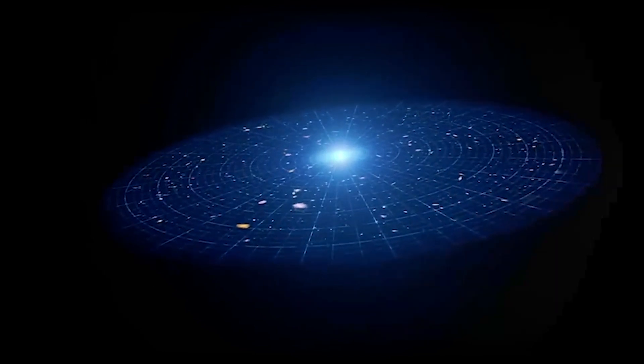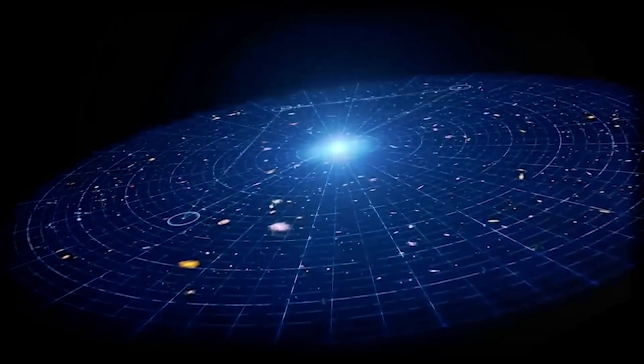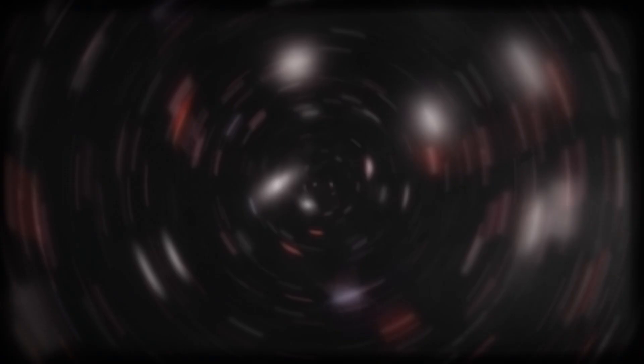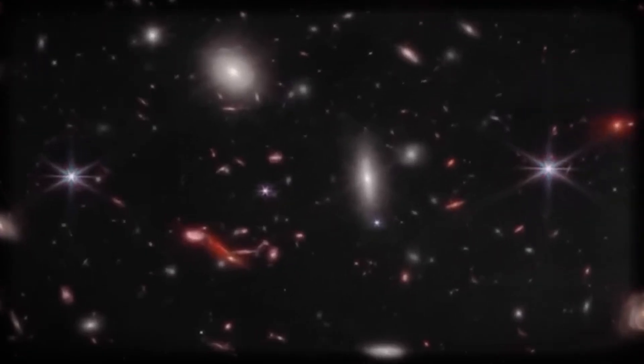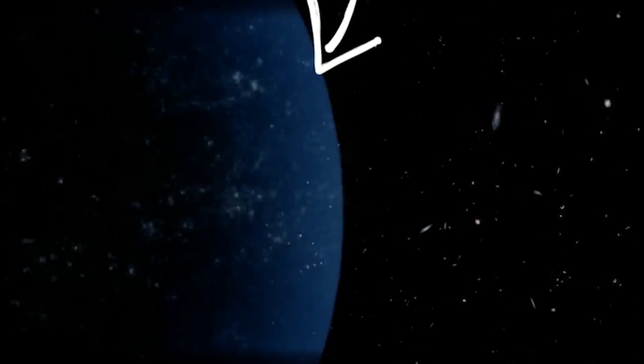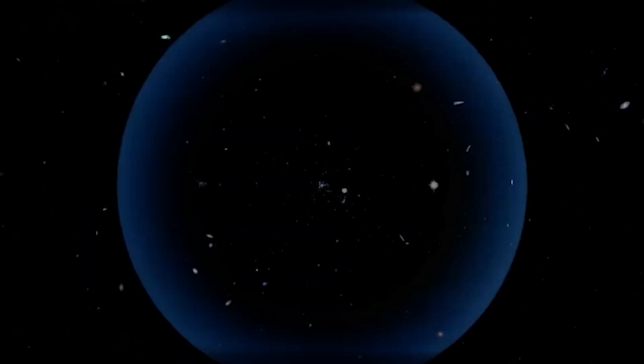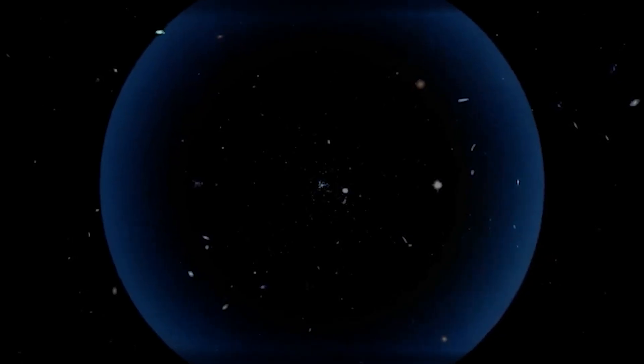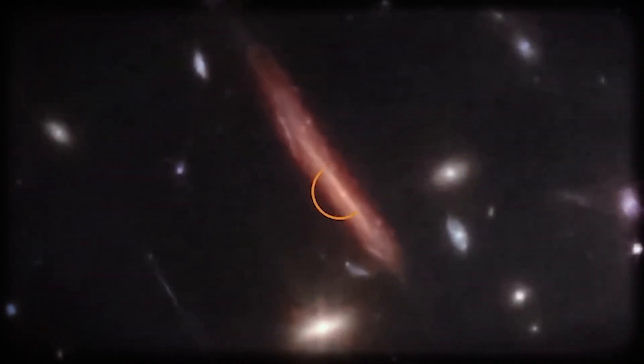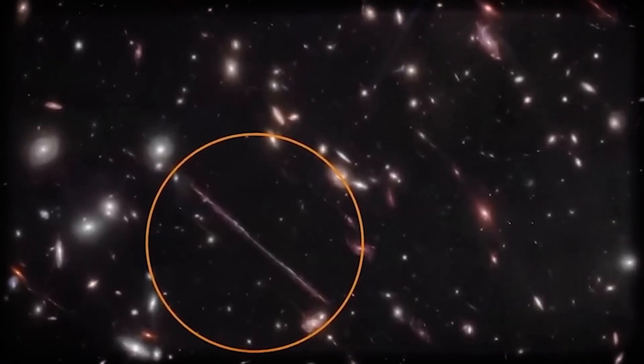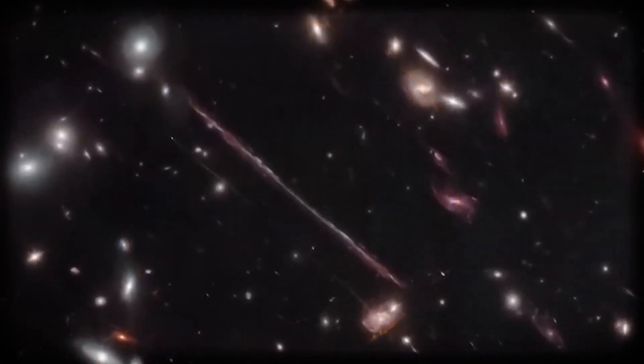Because the telescope isn't just spotting a few oddballs. It's finding massive galaxies packed with stars that, according to this model, should not exist yet. There simply hasn't been enough time or matter to create them. It's like finding a fully grown redwood tree in a world where seeds were planted five minutes ago. According to the math, the early universe shouldn't have had enough ordinary matter to build galaxies this large this fast.